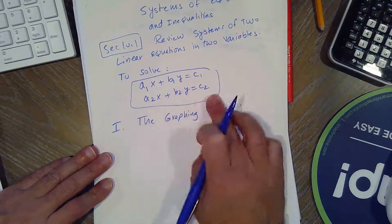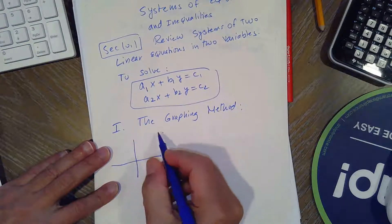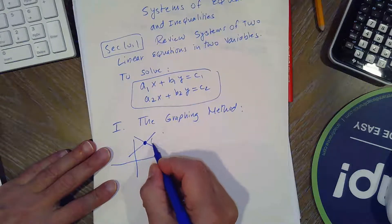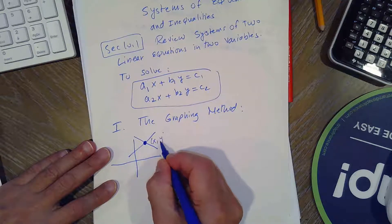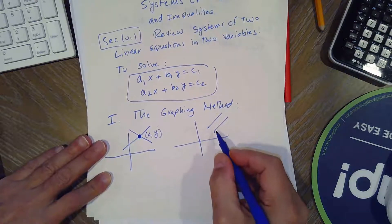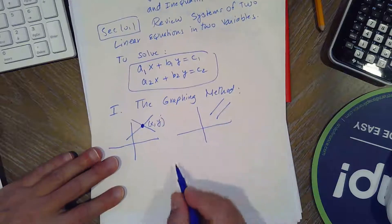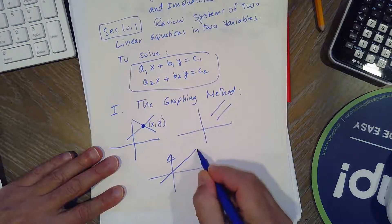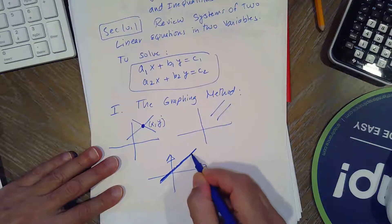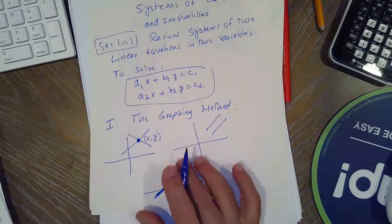Graph the first line, graph the second line, and you will have three different choices. The first is when the two lines intersect — the system is called independent and we have one solution. When the two lines are parallel, we have no solution and the system is called inconsistent. When the second line is exactly the same as the first, we have infinite solutions and the system is called dependent.